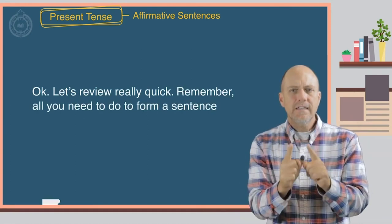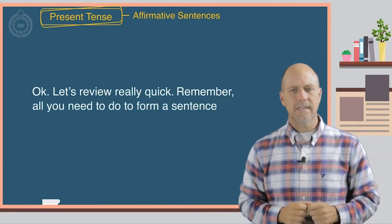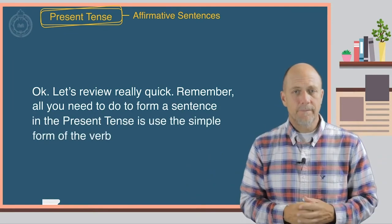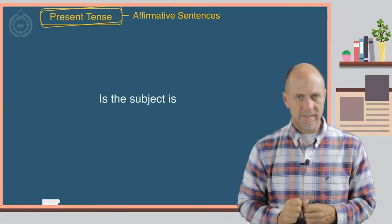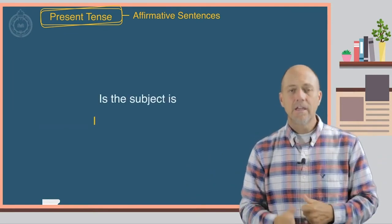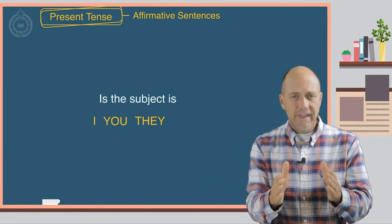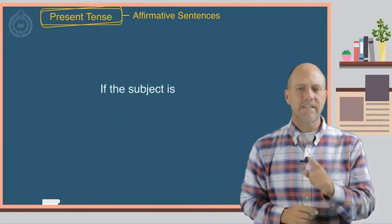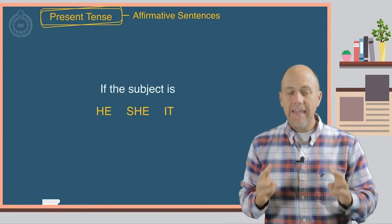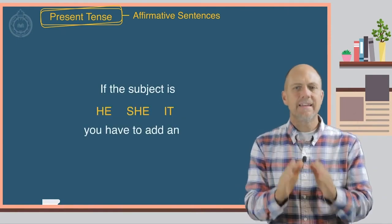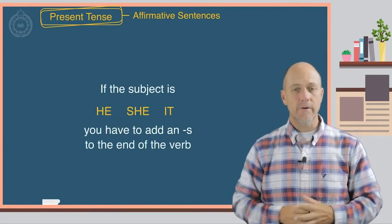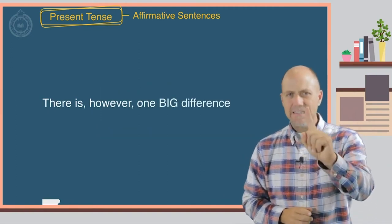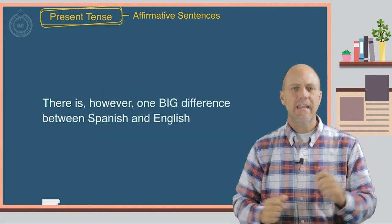Remember, all you need to do to form a sentence in the present tense is use the simple form of the verb. If the subject is he, she, or it, you have to add an S to the end of the verb. There is, however, one big difference between Spanish and English.